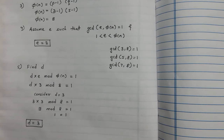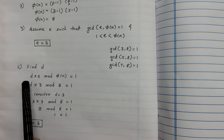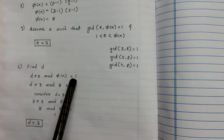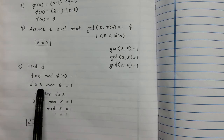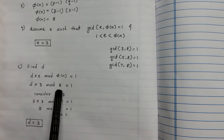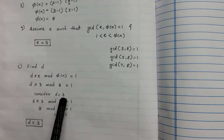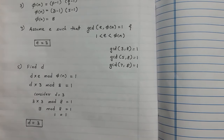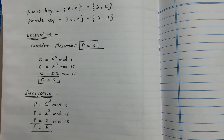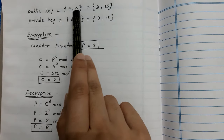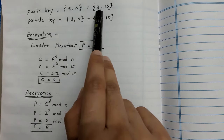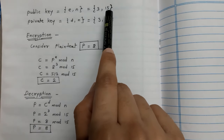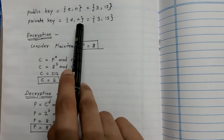The next step is to find the value of D, the private key, using D × E mod Phi(N) = 1. We have E = 3 and Phi(N) = 8. If D = 3, then 3 × 3 mod 8 = 9 mod 8 = 1. So D = 3. The public key is (E, N) = (3, 15) and the private key is (D, N) = (3, 15).